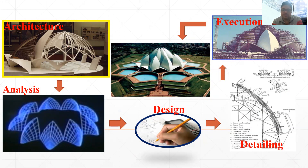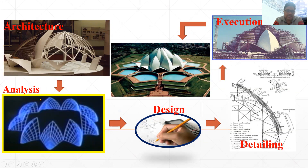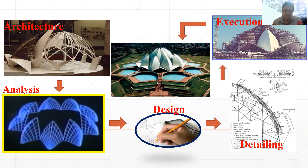The structure engineer is responsible for analyzing the form of the building that the architect has proposed. The second stage is analysis. The architect presents his proposal — drawings and design concepts — to the structure engineer, who then analyzes the building elements. In the analysis, the structure engineer finds out what forces or effects are acting on the building, expressed in terms of load, which must be calculated.